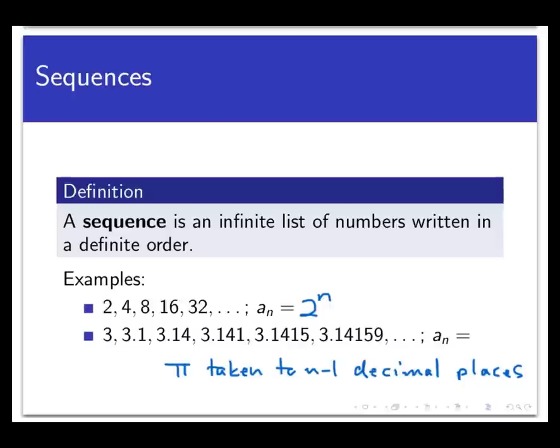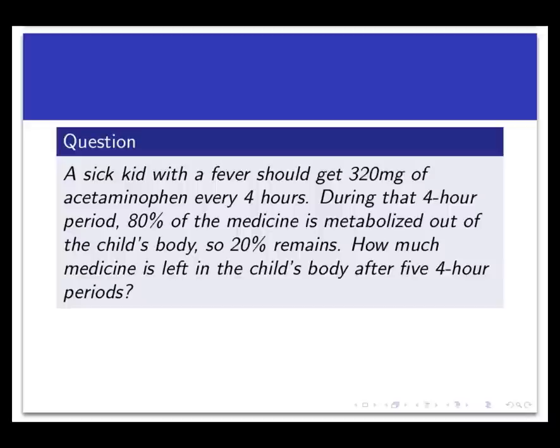So that is a description of the nth term without exactly being a formula, and that's okay. Now let's take a look at a problem that's going to motivate a specific kind of sequence that's going to be quite easy to work with using our notions of induction. This actually comes from what every parent has gone through before. You have a sick kid, they're running a fever, and so you give them acetaminophen. That's a drug we all take for fevers and pain relief. It says on the box that a sick kid of this child's weight and age should get 320 milligrams of acetaminophen every four hours. During that four hour period, 80% of the medicine in this particular child is metabolized out of the child's body so 20% remains. So how much medicine is left in the child's body after five four hour periods?